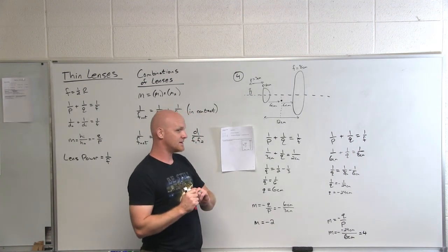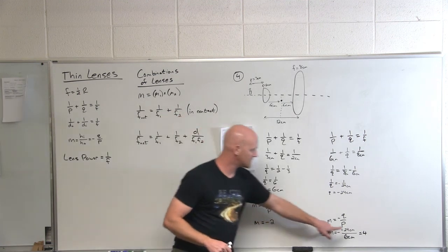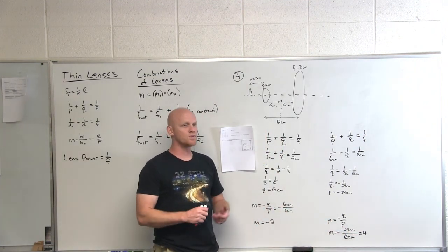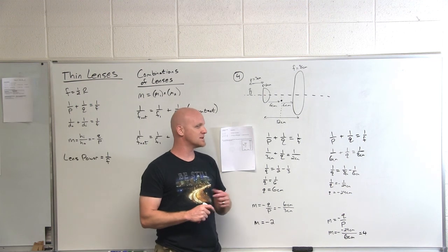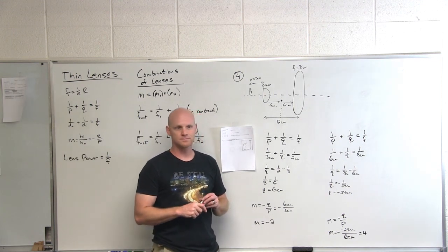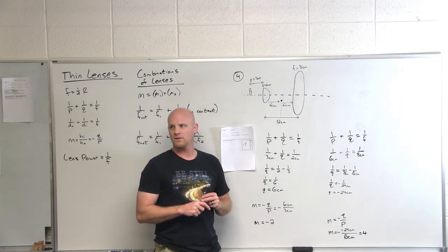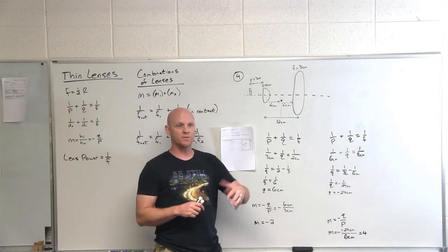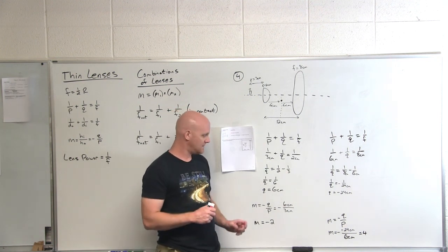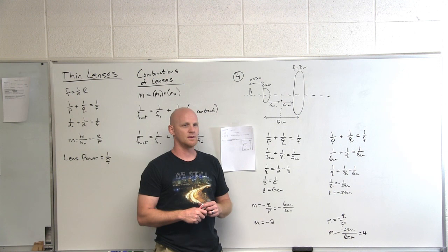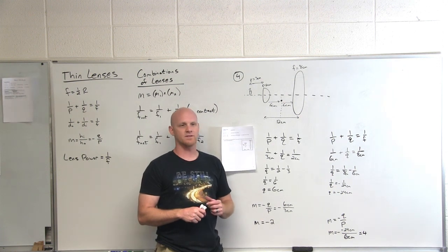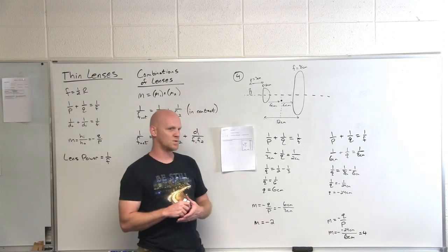So not just eight, but negative two times positive four is negative eight. And so the overall magnification is negative eight, which means what? Again, the final image will be inverted relative to the original object and it'll appear to be eight times larger than the original. Cool.